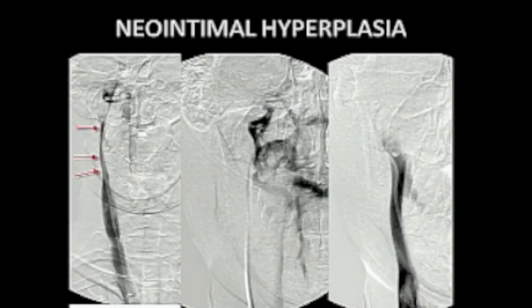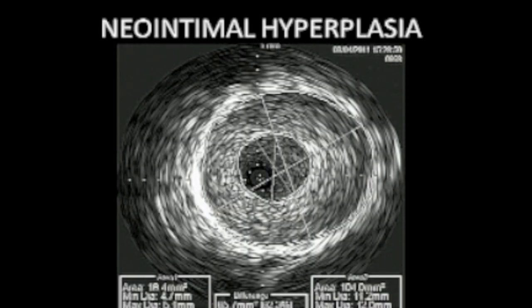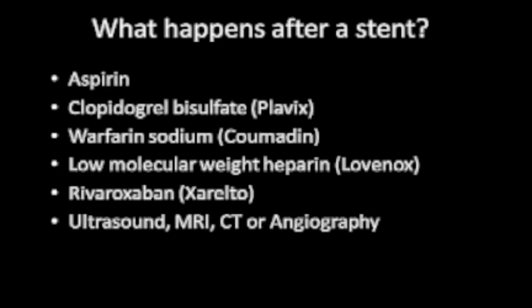In one of Dr. Scafani's IVA studies, neointimal hyperplasia in the internal jugular shows the vessel wall very thick with severe narrowing of the true lumen. After stent placement, patients are typically put on aspirin, Plavix, Coumadin or warfarin sodium, low molecular weight heparin, or rivaroxaban — a newly approved oral direct thrombin inhibitor that does not require lab follow-up. Follow-up may include ultrasound, CT scans, MRIs, and if there is a complication, repeat venography.